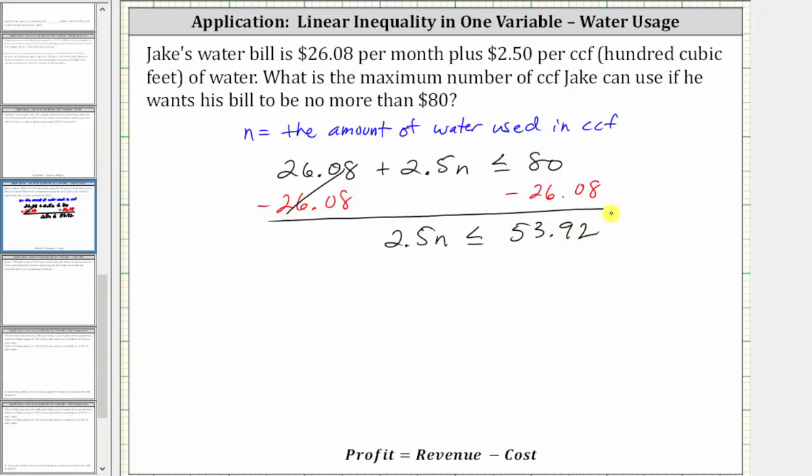The last step is to multiply or divide to solve for N. 2.5N means 2.5 times N, and therefore the last step is to divide both sides by 2.5. Simplifying, 2.5 divided by 2.5 simplifies to one. One times N is N. N is less than or equal to 53.92 divided by 2.5.